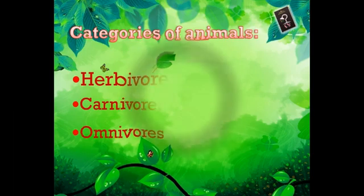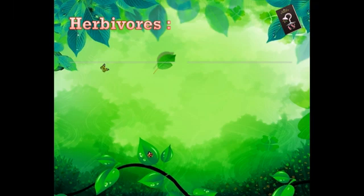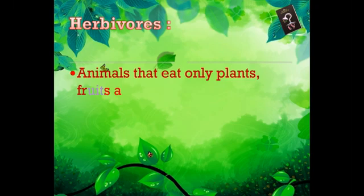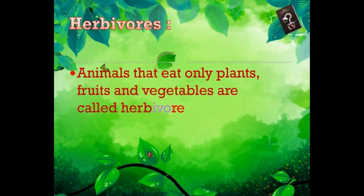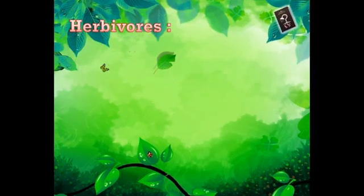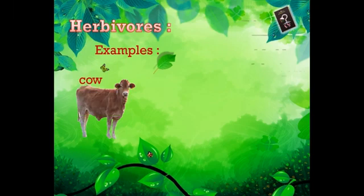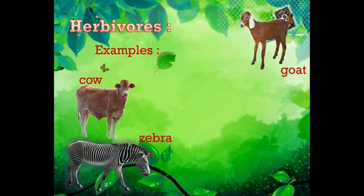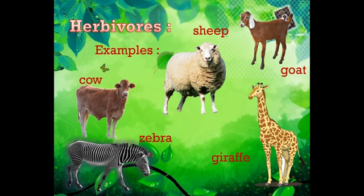The first category is herbivorous animals. Animals that eat only plants, fruits, and vegetables are called herbivorous animals. This type of animal eats plants or plant products. Examples of herbivorous animals are cow, goat, zebra, sheep, and giraffe. All these animals eat only plants or plant products.